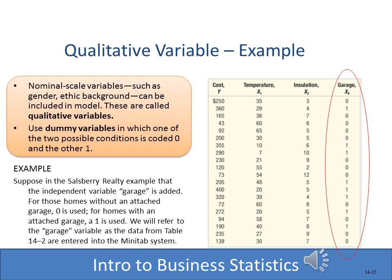Another factor we might consider is whether the house has a garage. This is a qualitative yes/no variable, not a numeric one. However, it's possible to translate qualitative variables — especially yes/no or categorical ones — into numeric values. We create what's called a dummy variable: 0 if it doesn't have a garage, and 1 if it does, allowing us to use it in the multiple regression.